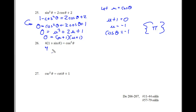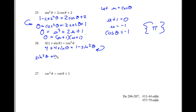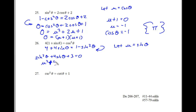In problem 26, distributing the 4 seems like the proper strategy. I have cosine squared theta, so I'll replace it with 1 minus sine squared theta. Moving everything to the left side: I want sine squared theta first, then plus 4 sine theta, and subtract 1 from both sides so it equals 3. Letting u equal sine theta, I have u squared plus 4u plus 3 equals 0 — wait, I need to correct that to equal 0.